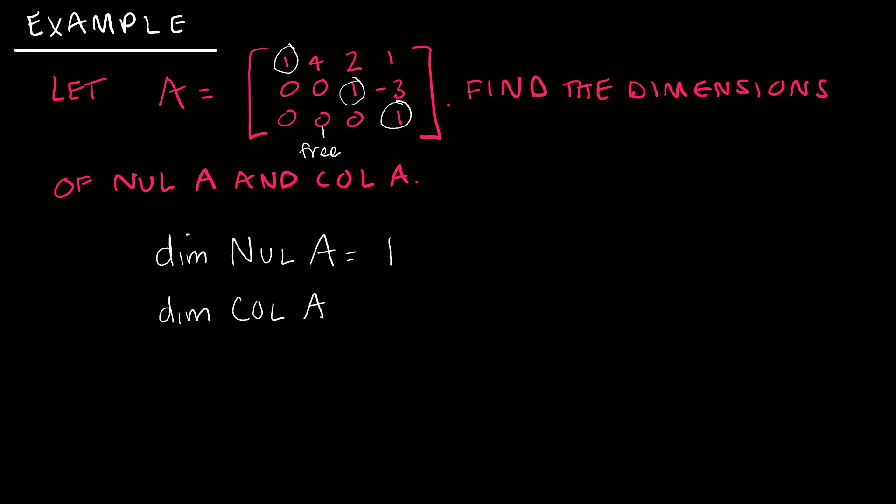I've got one free variable, and therefore the dimension of the null space A is 1. And the dimensions of the column space of A is the number of pivot columns, and I have 1, 2, 3 pivot columns. And hopefully we can tell just by the definition of the dimension of each that we're going to end up with the total to be the number of total vectors that we started with. Because each column is either going to be a free variable or it's going to be a pivot column.